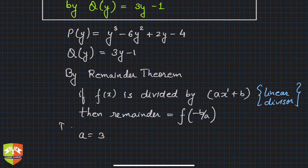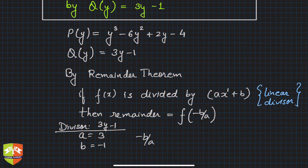What are a and b? We can find out. In this case, a = 3 because our divisor is 3y - 1, where the variable is y. So a = 3 and b = -1. Therefore, -b/a = -(-1)/3 = 1/3.